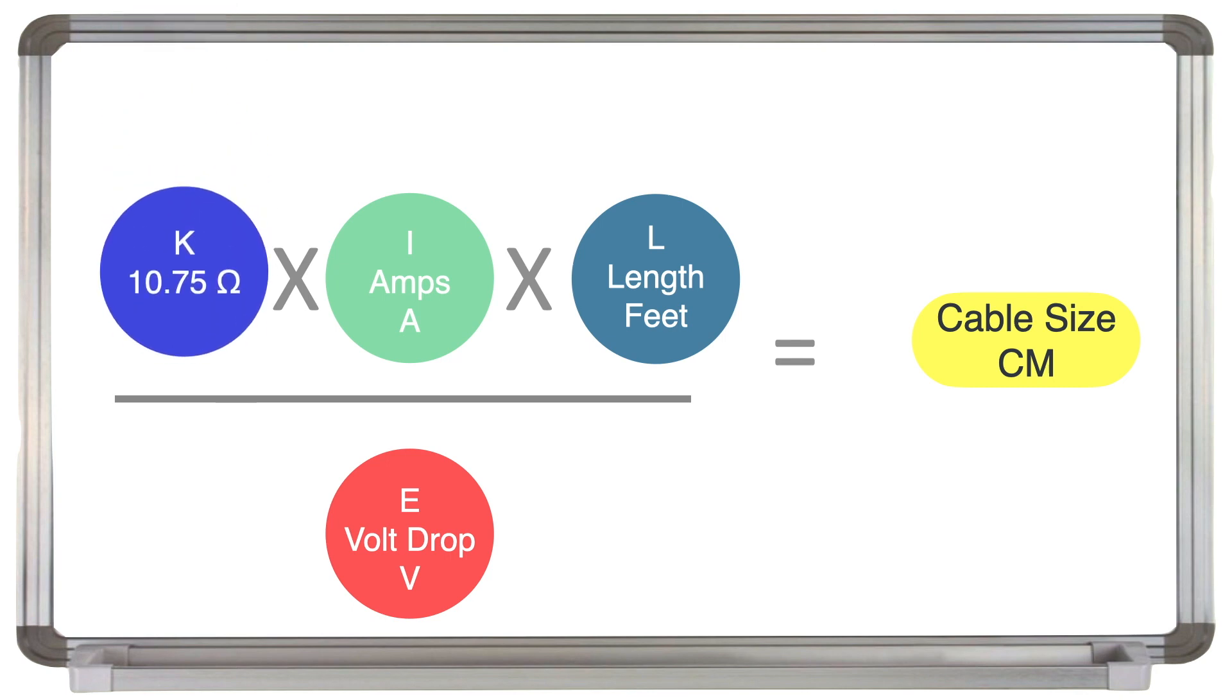Well, we know what K is, 10.75. This figure is a constant in this formula and the accepted standard under the regulations. And we're going to use an example of, say, 10 amps. And the full loop length of cable, including the positive and negative conductors in our example, is going to be 33 feet.